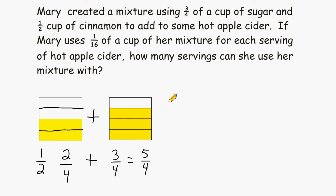Now the problem goes on to say that Mary is going to use one-sixteenth of a cup of her mixture for each serving of hot apple cider. So what we can do is break these quarters into sixteenths and just count how many sixteenths we would have altogether.